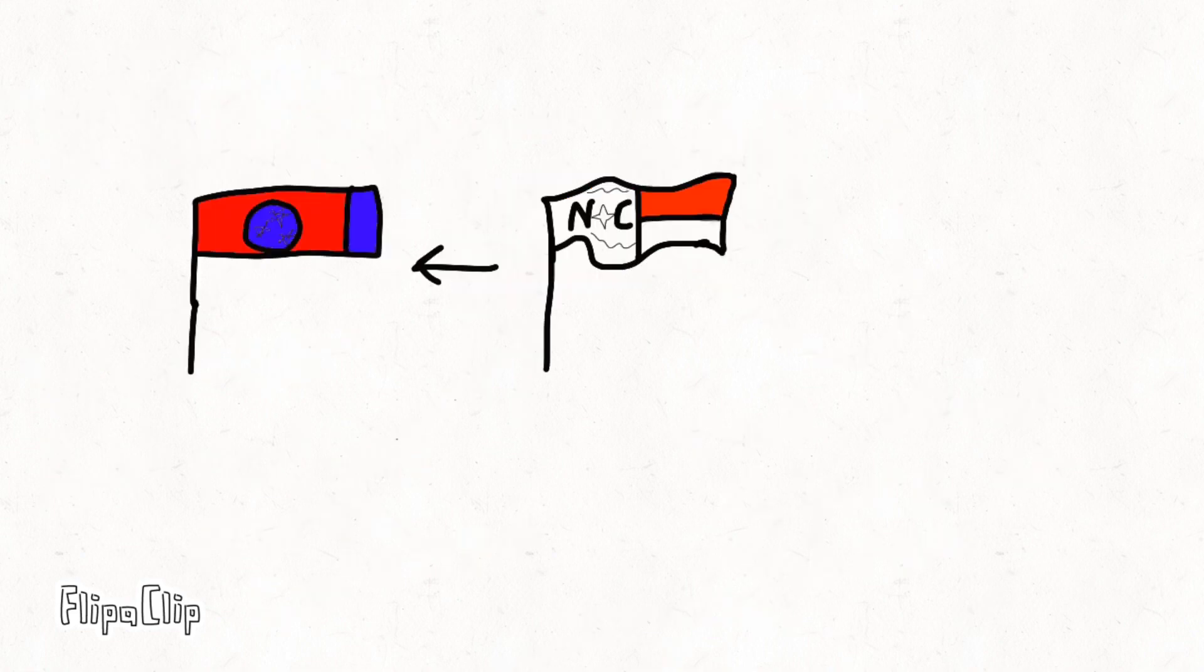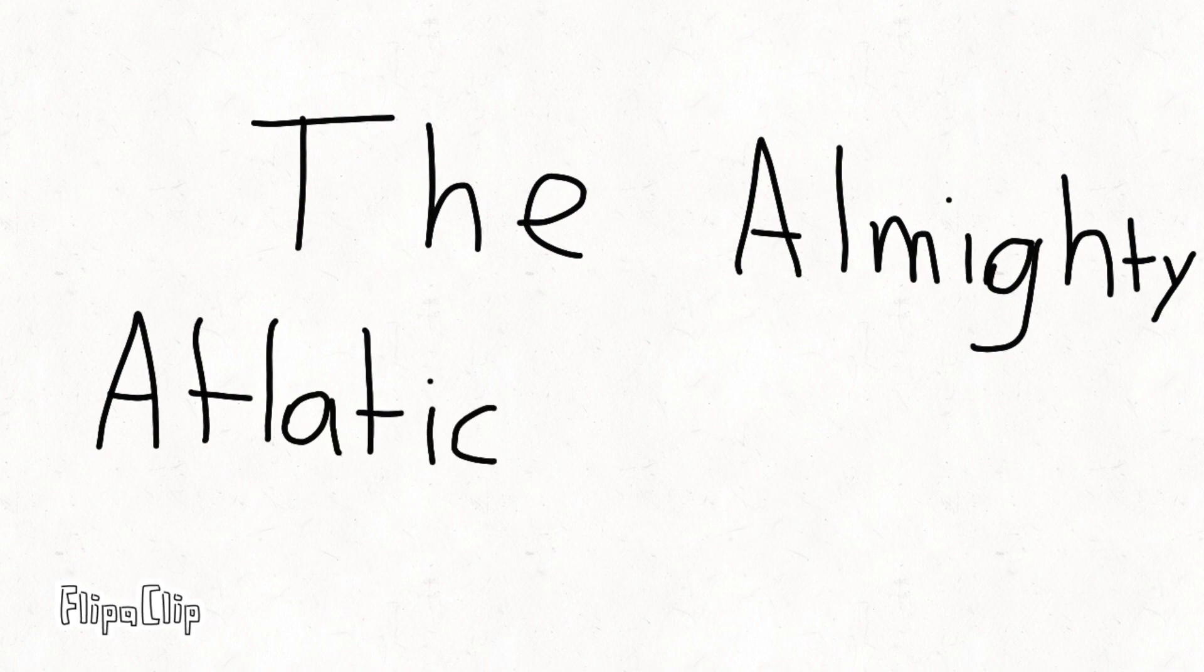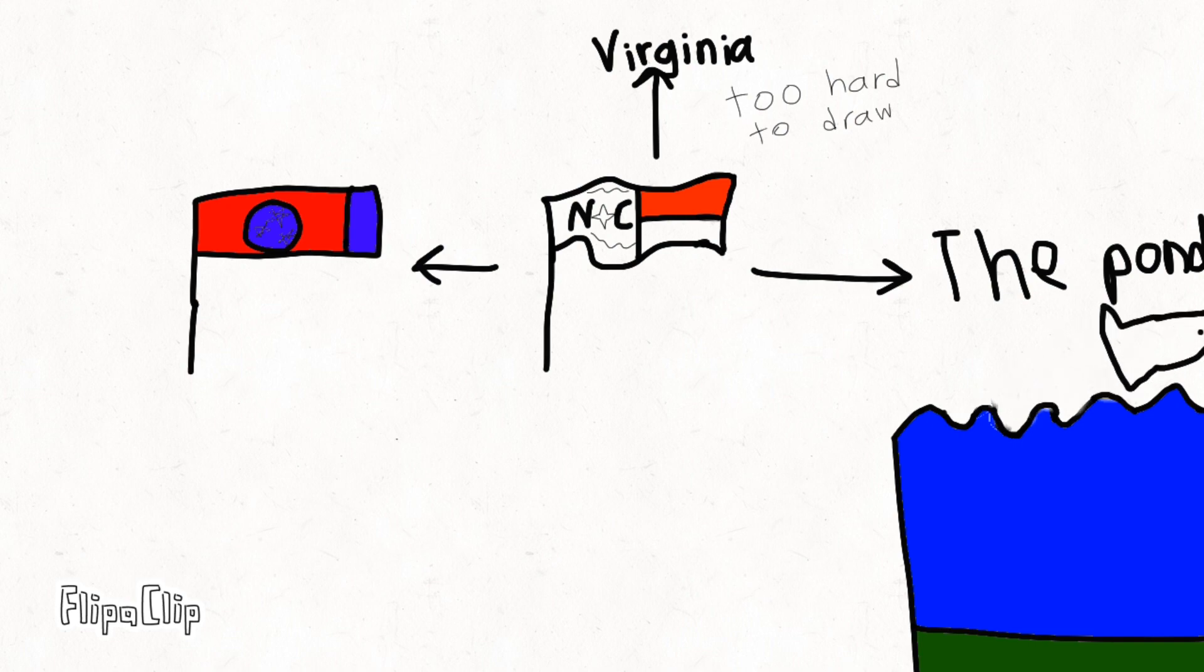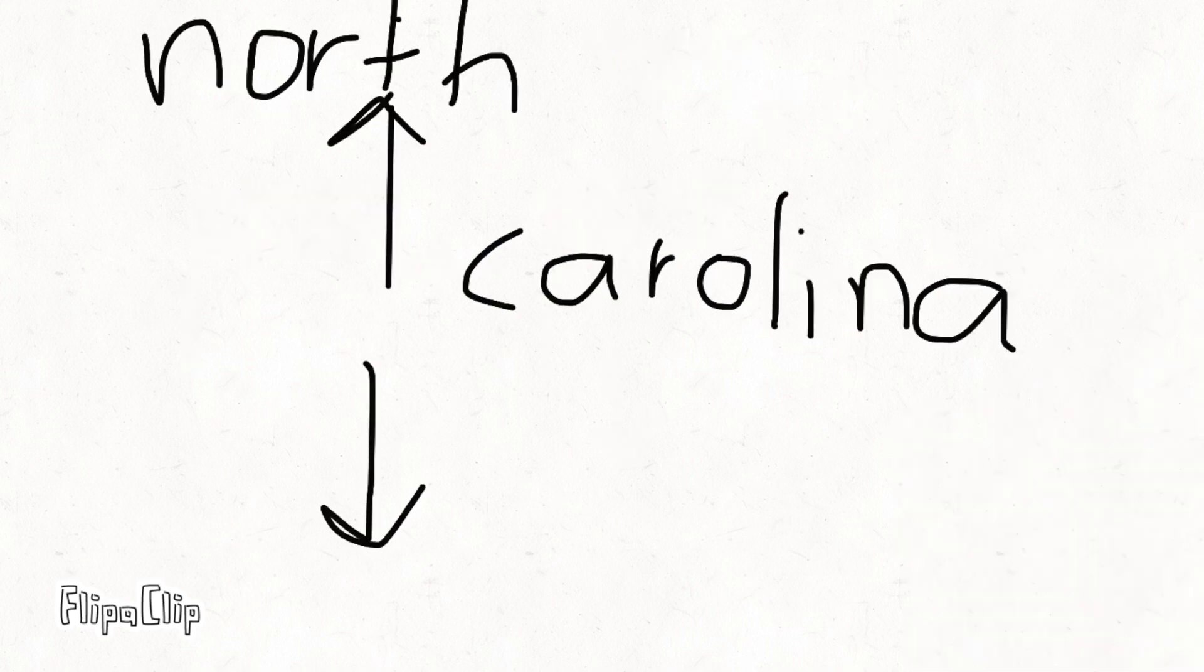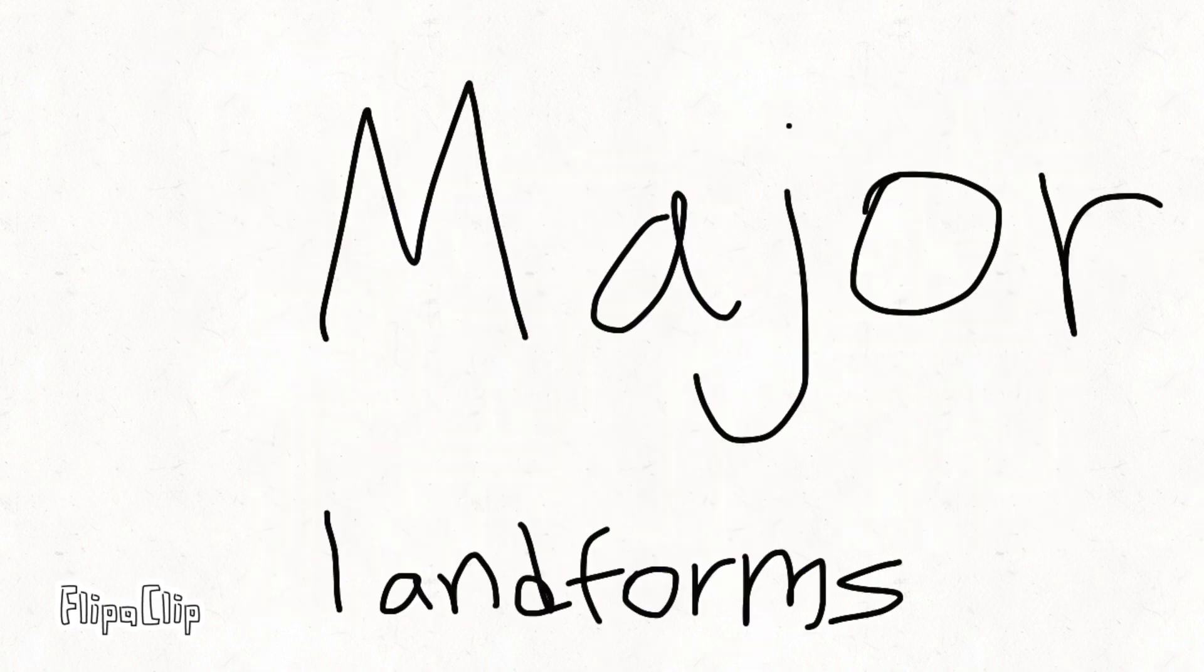To the west of it is Tennessee, to the north is Virginia, to the east is the almighty Atlantic Ocean, and to the south is South Carolina.